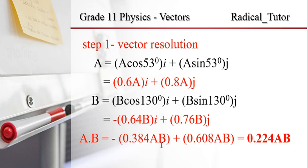So if you want to write this term, you write down negative 0.7 AB. That is the final result for A dot B. Thank you. See you again.